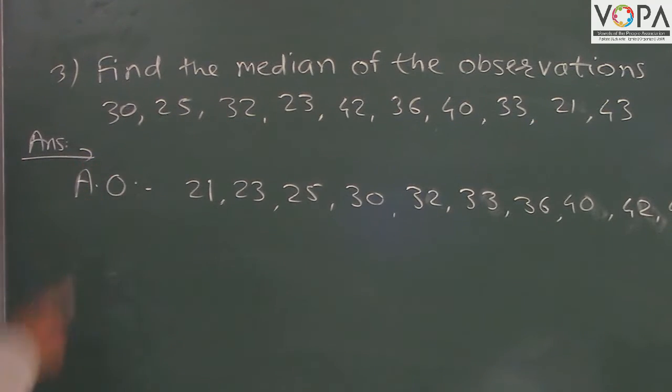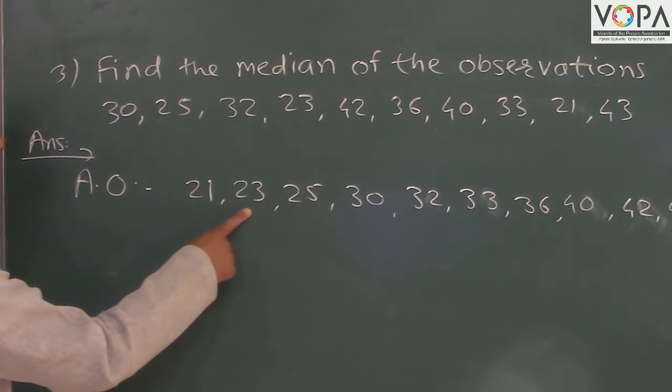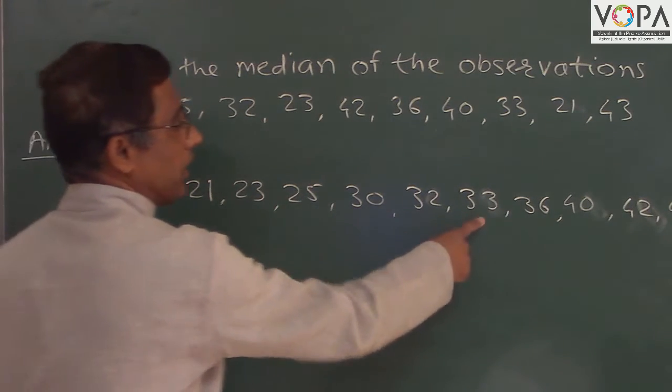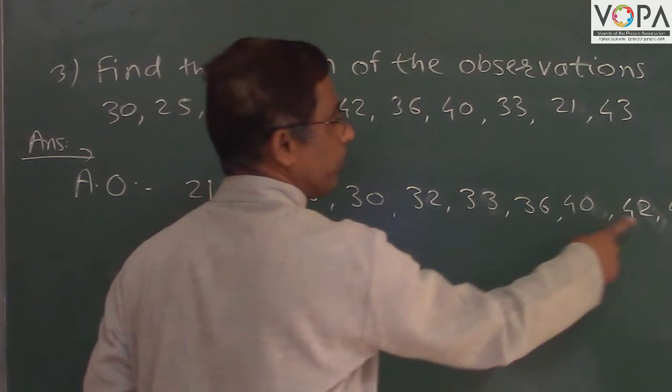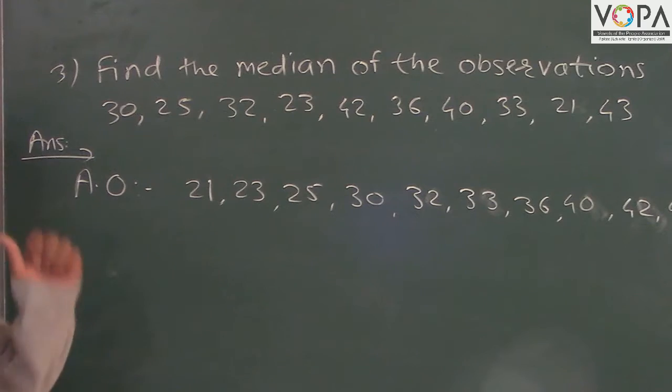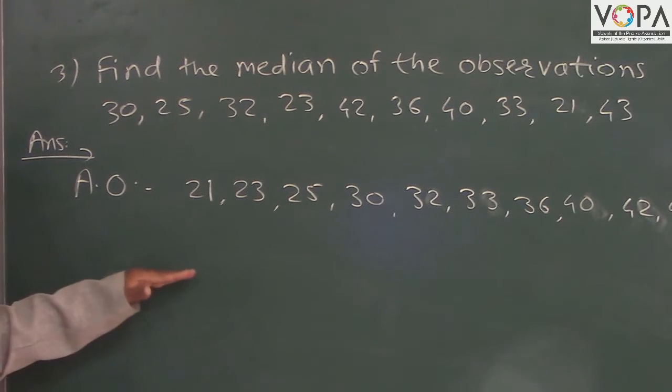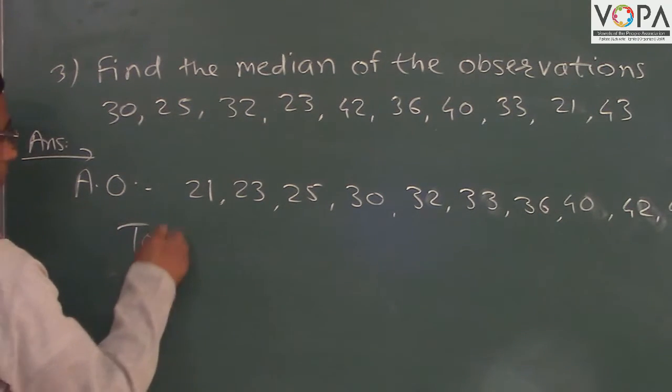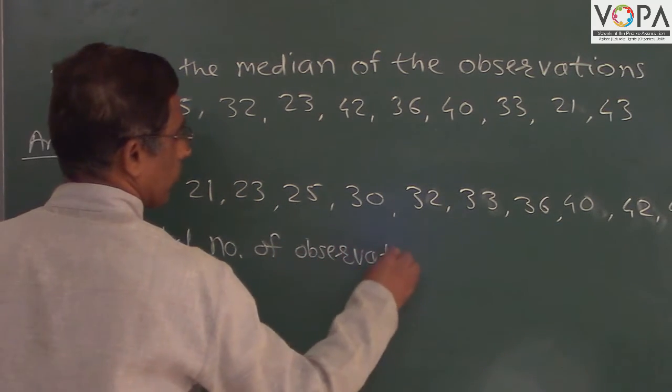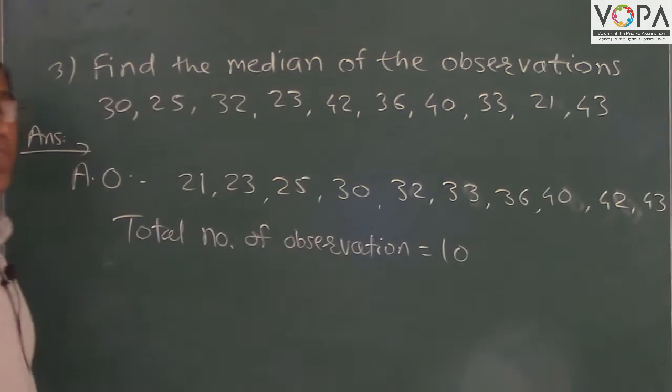Write the given observations in ascending order. So 21, 23, 25, 30, 32, 33, 36, 40, 42, and 43. These are in ascending order. So total number of observations is 10, means even.